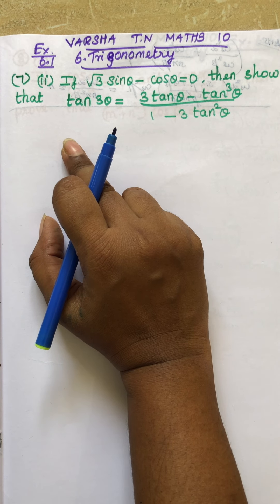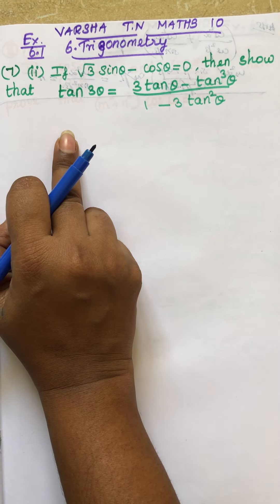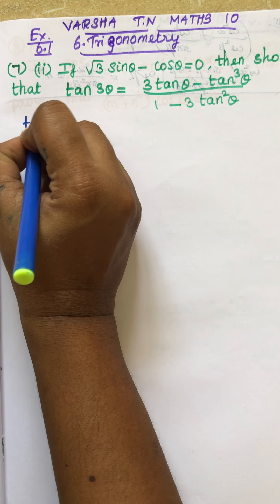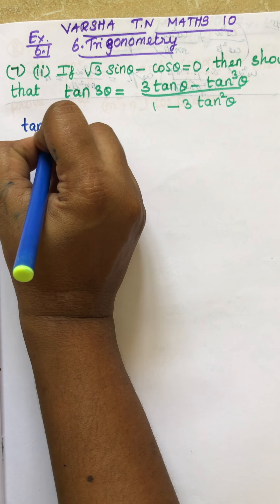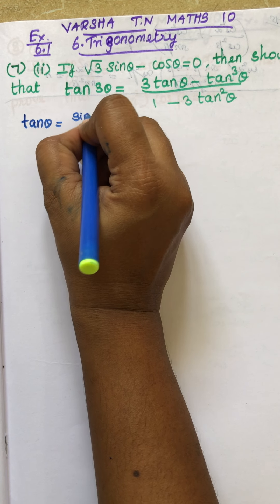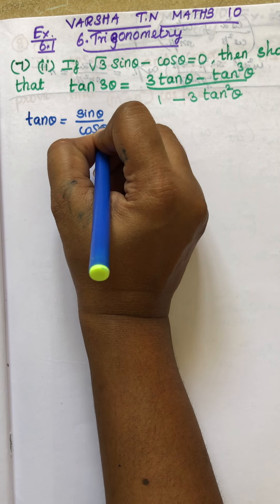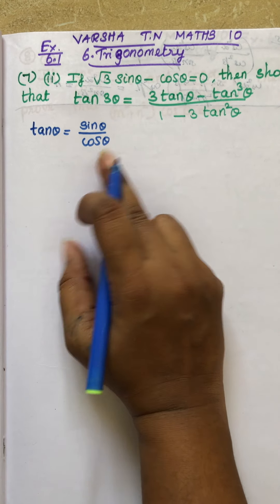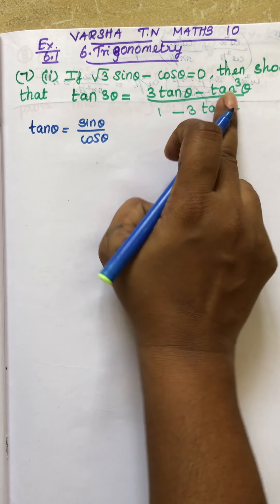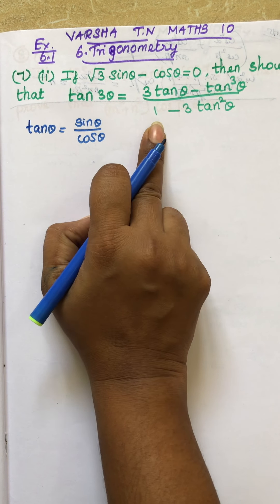Before that, we have to learn a little bit about tan θ. We are going to write tan θ as sin divided by cos. This is the question — here we have to recall tan, and tan is sin by cos.